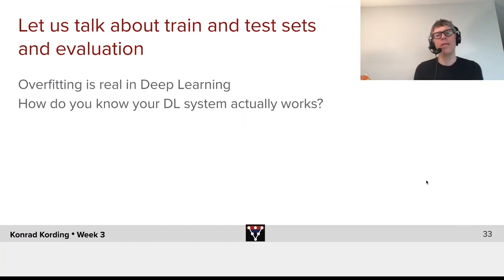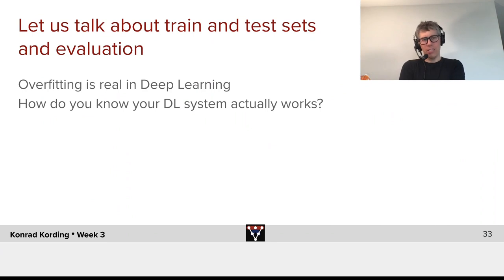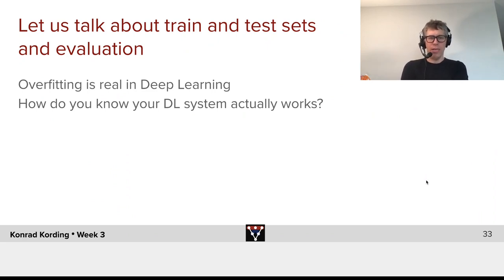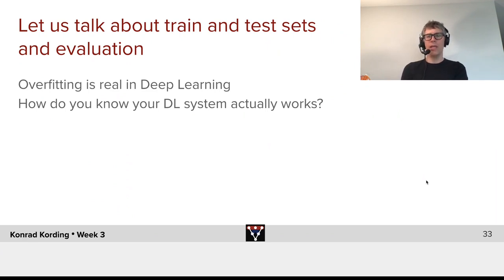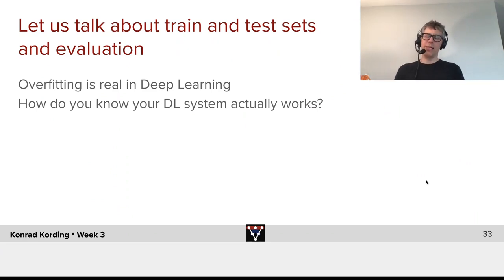Let us talk a little bit about training sets and testing sets, and about evaluation. The reason isn't that you haven't seen this before in machine learning — you have, undoubtedly. But bad cross-validation and bad evaluation are so endemic in machine learning and deep learning that it's really important to talk about it. First thing is: overfitting is real in deep learning.